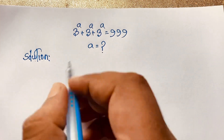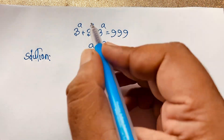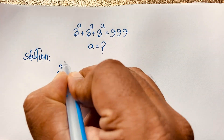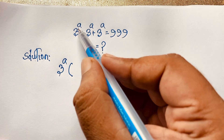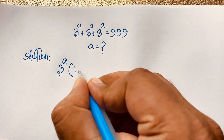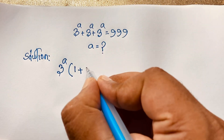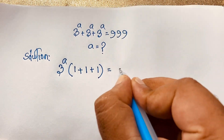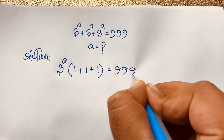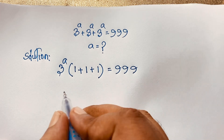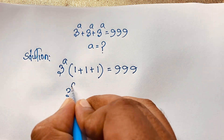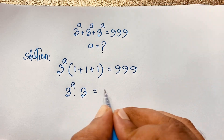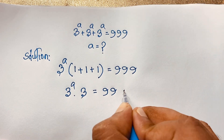Our question is 3 to the power a plus 3 to the power a plus 3 to the power a. You can see here 3 to the power a is common. So if we factor it out, it will be 3 to the power a times (1 plus 1 plus 1), which is equal to 999. Because 1 plus 1 plus 1 equals 3, we have 3 to the power a times 3 equals 999.